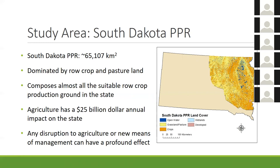The study area I'm going to analyze is the South Dakota prairie pothole region, dominated by row crops and pasture land, as shown in a map I made from the National Land Cover database. This area composes almost all the suitable ground for row crop production in the state. Agriculture has a $25 billion annual impact on the state economy, so any disruption could have a profound effect, and there would be interest in new means of management.